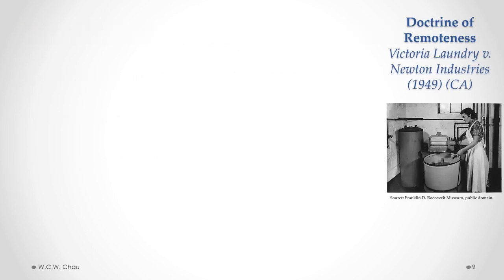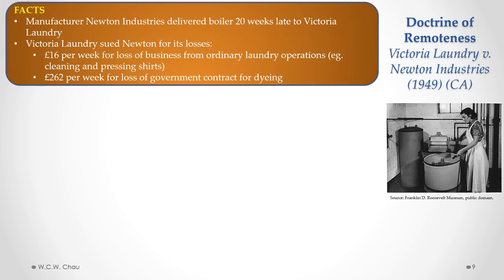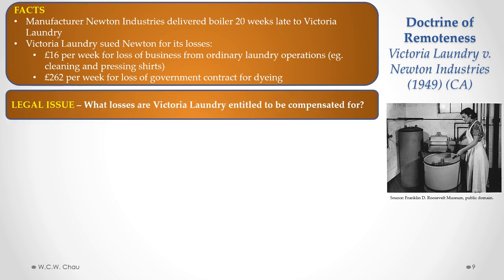The case which sets out the principles for the doctrine of remoteness is the English Court of Appeal case Victoria Laundry v. Newton Industries. The manufacturer, Newton Industries, had a contract to deliver a new boiler to Victoria Laundry. However, Newton delivered the boiler 20 weeks late, and Victoria Laundry sued Newton for its losses caused by that 20-week delay. Victoria Laundry claimed a loss of ordinary business income of £16 per week from their ordinary laundry operations, and also a loss of £262 per week because they lost the opportunity to get a lucrative government contract because they didn't have the boiler.